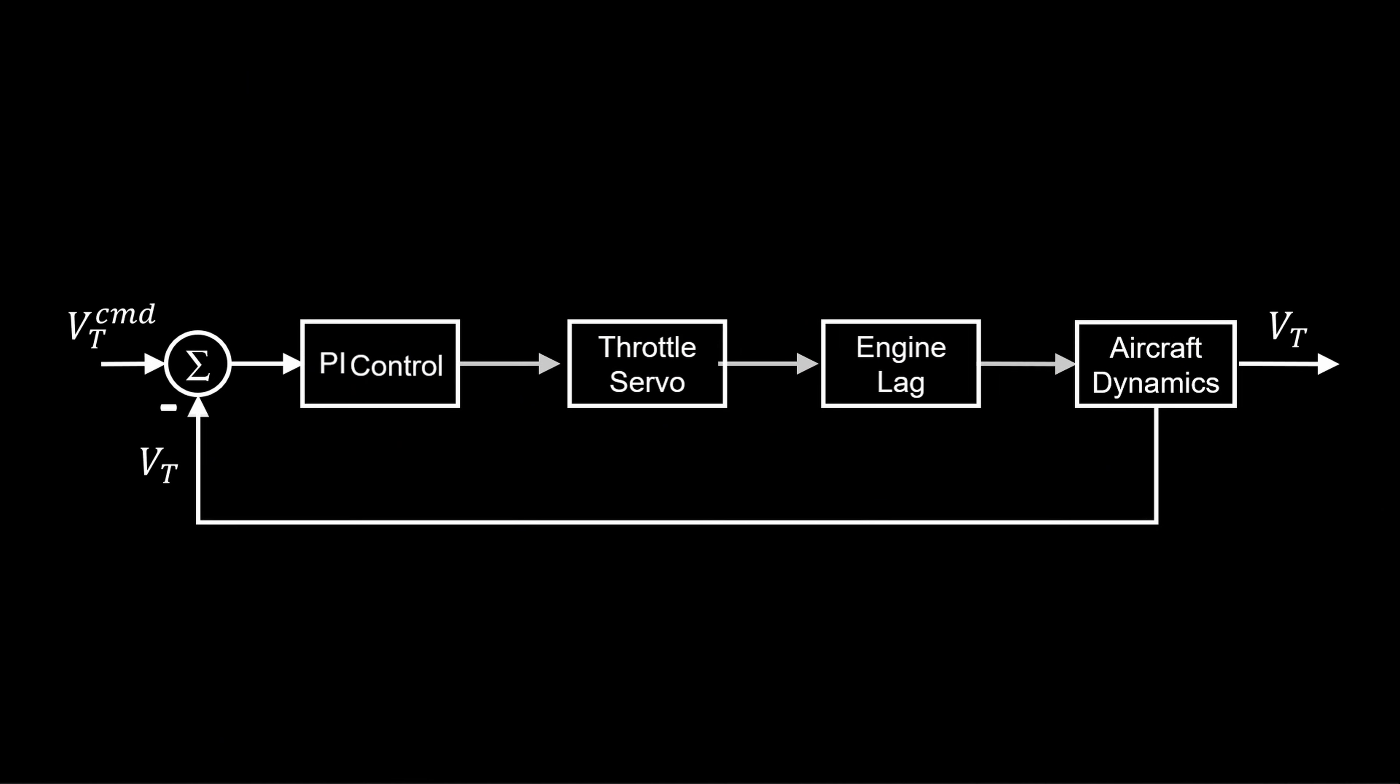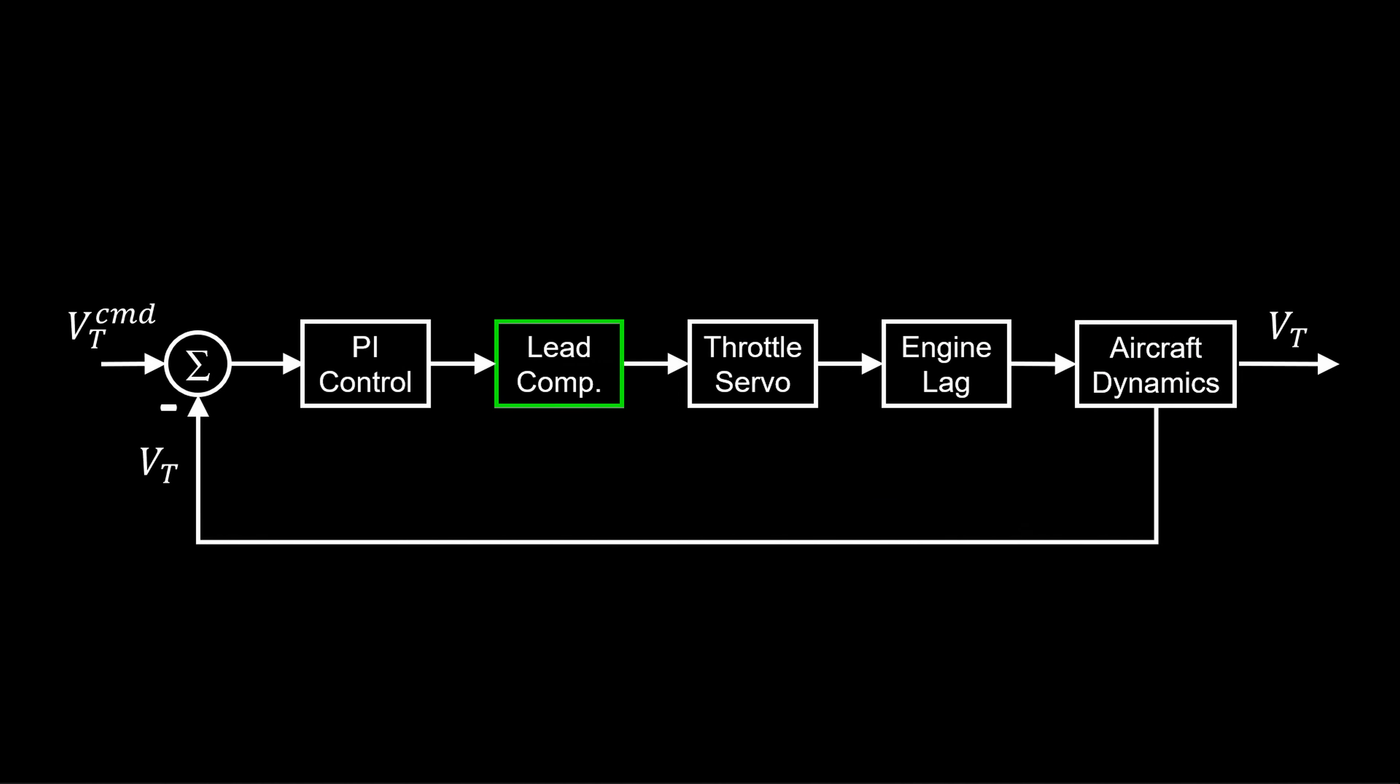To improve the closed loop step response, we introduce a lead compensator. It's the slow engine response that causes the problem with our tuning. We use the lead compensator to replace the slow engine pole at minus 0.2 with a pole at minus 4. The factor of 7.5 ensures the steady state gain of the compensator is 1.